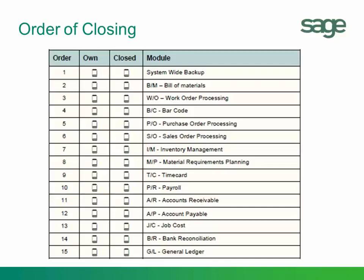You'll notice that the very first task is to do a backup, and again make sure that you've tested that backup — because if something goes astray, you have something to return to. Then process these modules in the order listed. If you don't have a particular module, you would ignore that. By going in this order, it will ensure a very systematic, clean close. Not all modules listed in the order of closing chart have an actual period-end processing menu task, such as bank reconciliation, but the list reminds you to take care of tasks in those modules prior to closing as well.